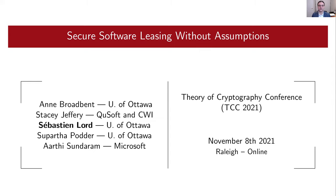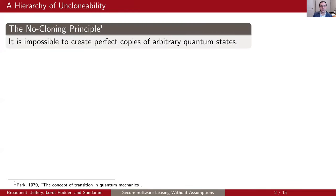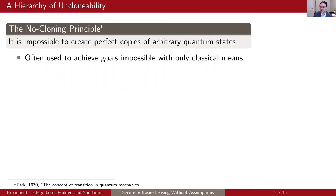One of my main interests in quantum cryptography is where we can apply the no-cloning principle to achieve things that would otherwise be impossible using only classical tools. Succinctly, the no-cloning principle states that it is impossible to create perfect copies of arbitrary quantum states. And this is the pillar of many quantum cryptographic primitives that achieve things that would be impossible with only classical means.